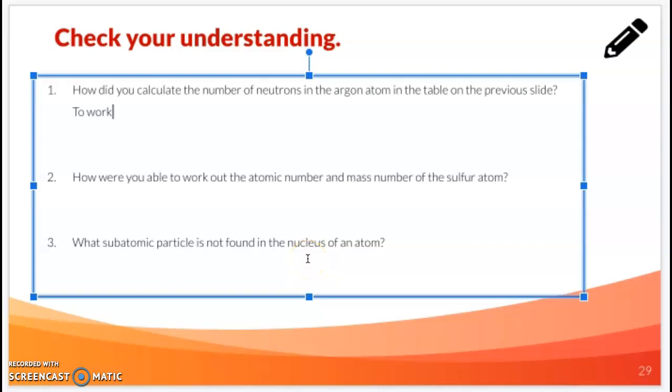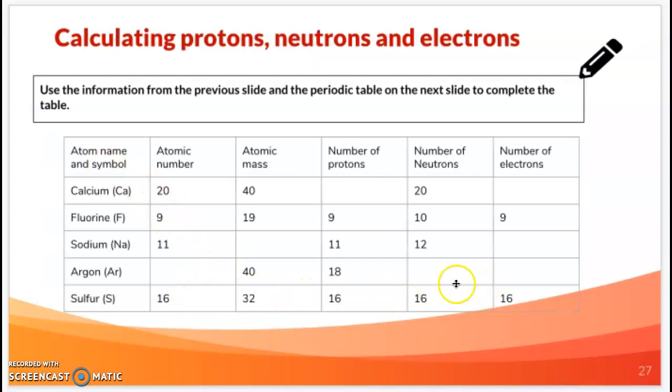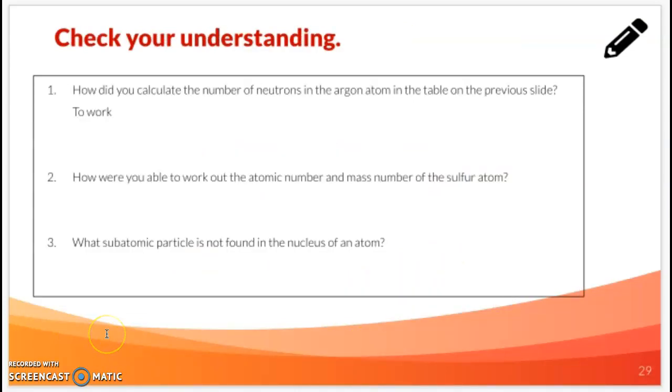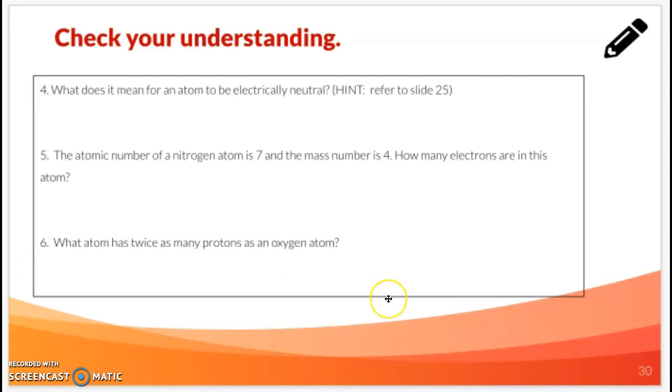How were you able to work out the atomic number and mass number of the sulfur? We've been given the number of protons, we've been given the neutrons. I know protons is the atomic number. I know mass number, you just add the two. What subatomic particle is not found in the nucleus? That is actually the electron. What does it mean for the atom to be electrically neutral? The positively charged protons are equal in number to the negatively charged electrons. If there's two protons, there's got to be two electrons. Balance each other out, just like on a scale.